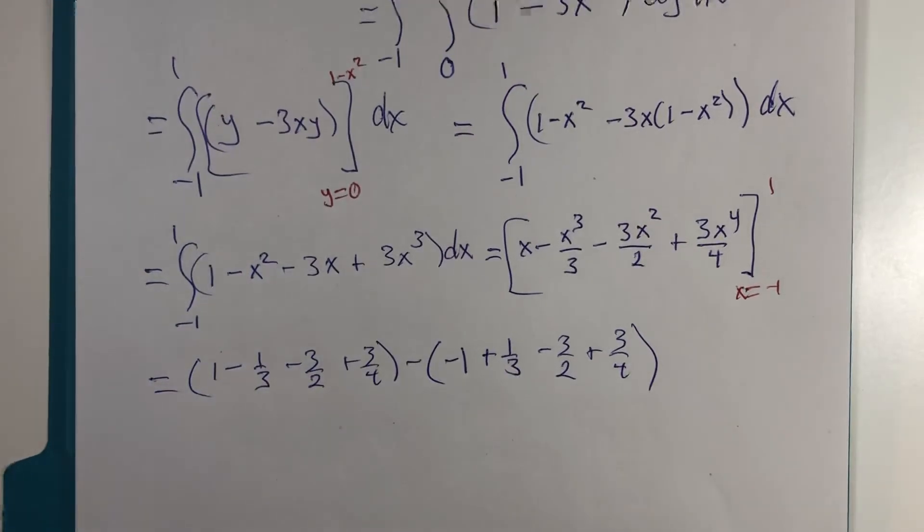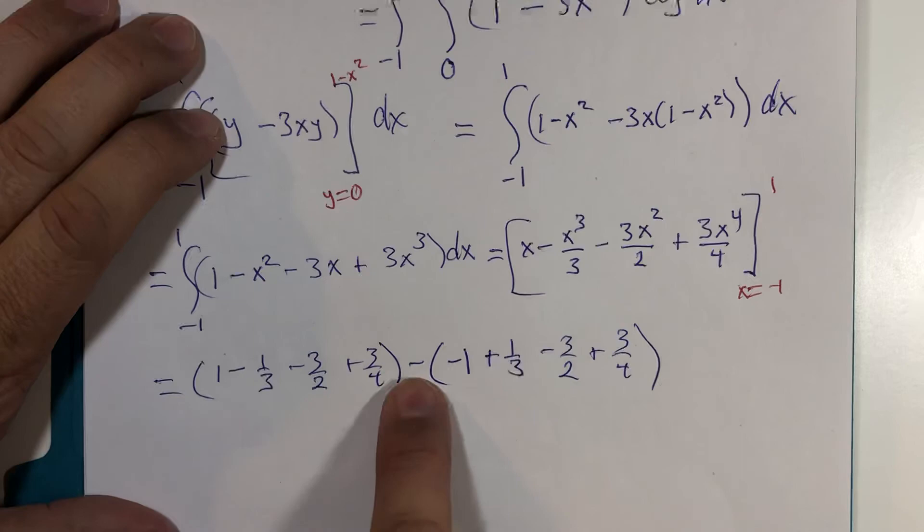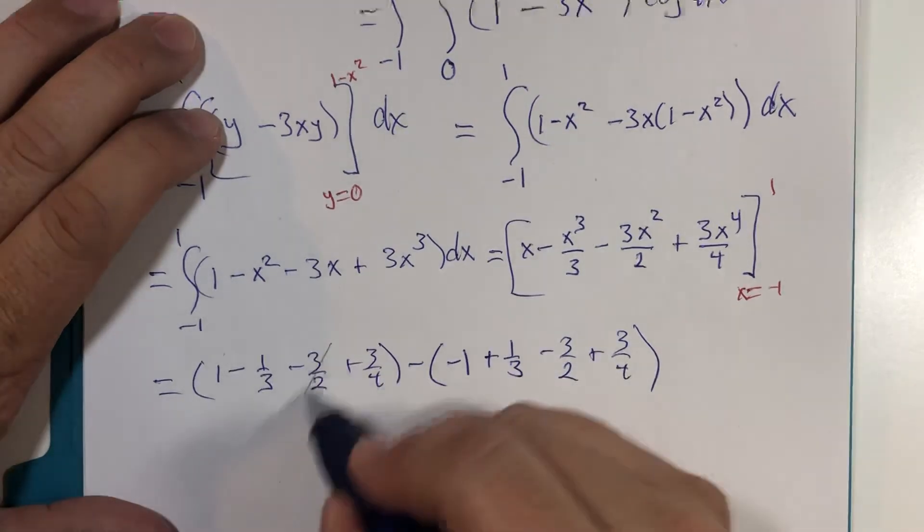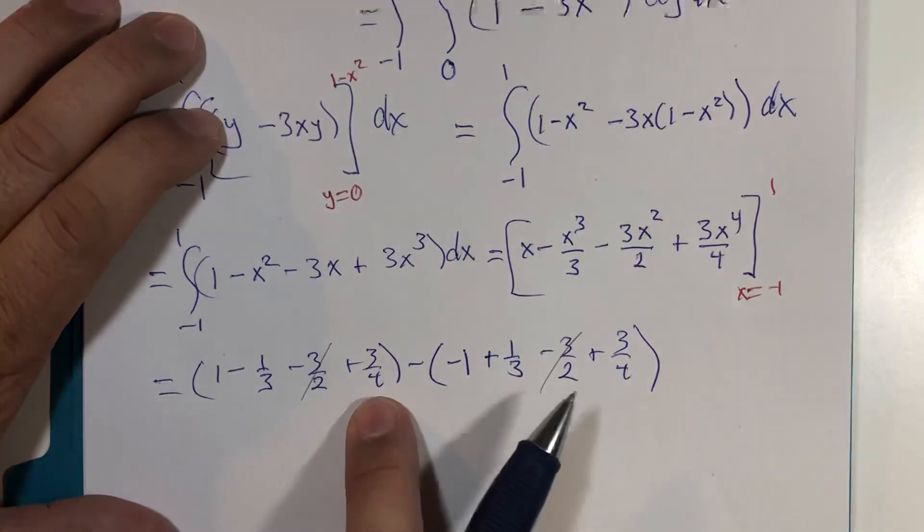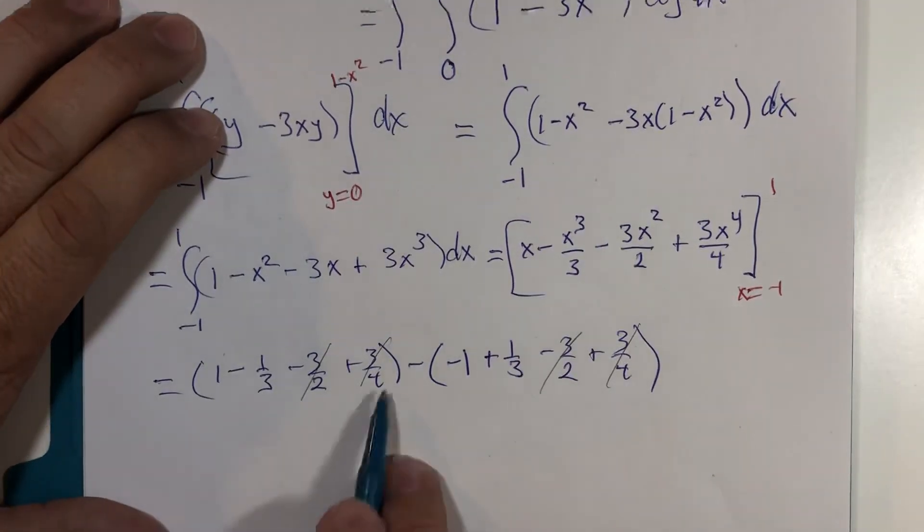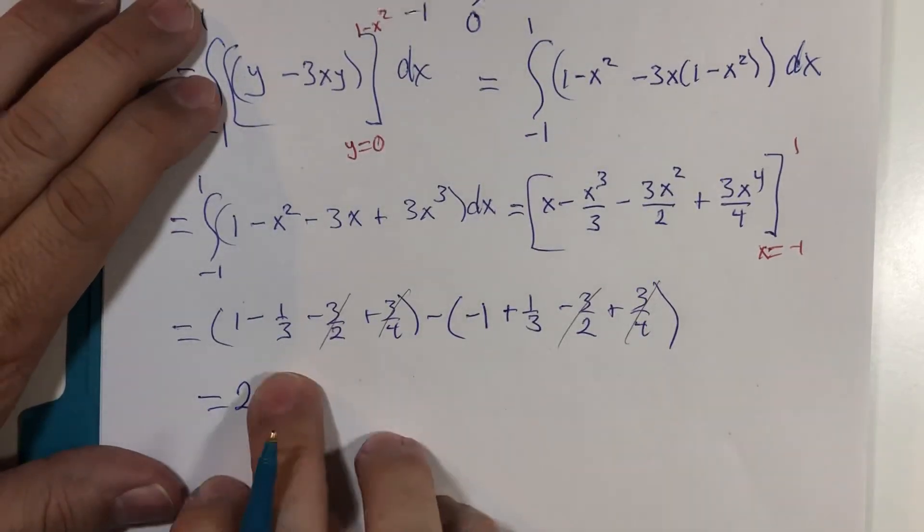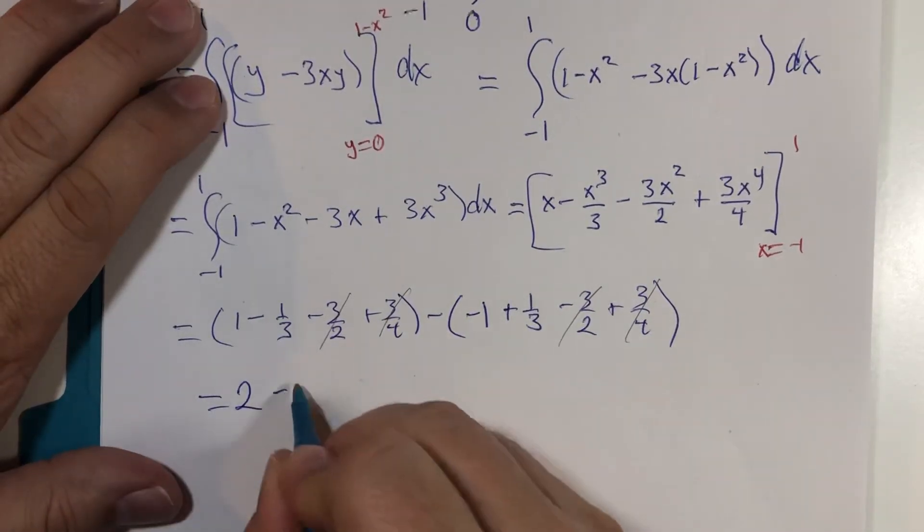All right. Let's look for some good news here. Negative 3 halves minus another negative 3 halves is 0. 3 fourths minus 3 fourths. More 0. And I get 1 minus a negative 1 which is 2. Negative 1 third minus 1 third minus 2 thirds.